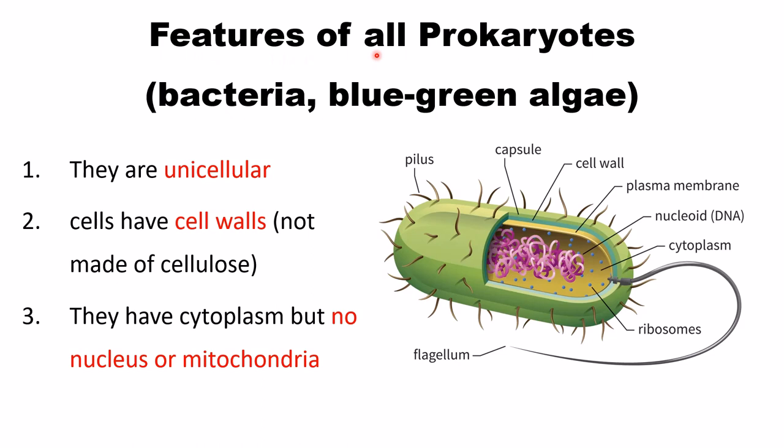Features of prokaryotes — examples include bacteria and blue-green algae. Most are unicellular. Their cells have cell walls, but not made of cellulose — some are made of polysaccharides. They have cytoplasm but no nucleus or mitochondria.